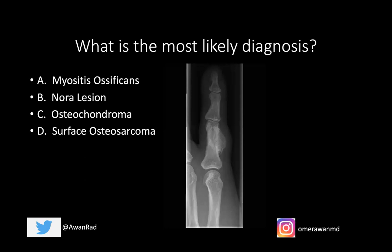A surface osteosarcoma would include a parosteal osteosarcoma or a periosteal osteosarcoma. I'll give you a couple of seconds to ponder on these cases.